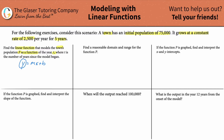Instead of calling this y, we're going to call it the population p. Instead of using x, that's going to become t. So we have p = m(t) + b. Now we need to find the slope and the y-intercept. The slope always represents the change per time — the rate of change here is 2,500 per year, so I plug that in for my slope: 2,500.